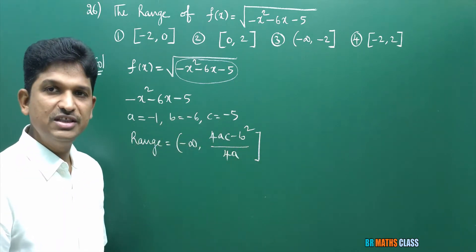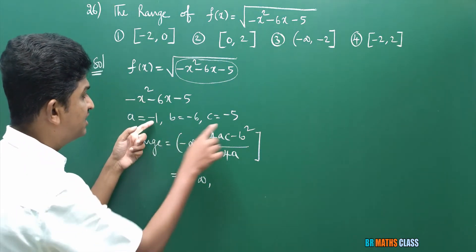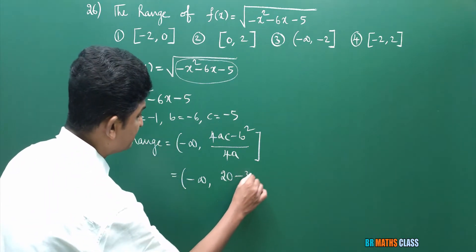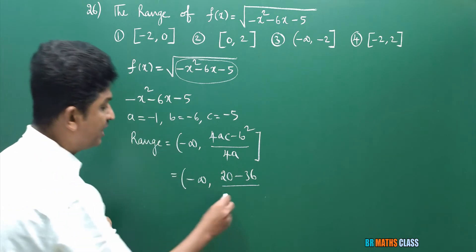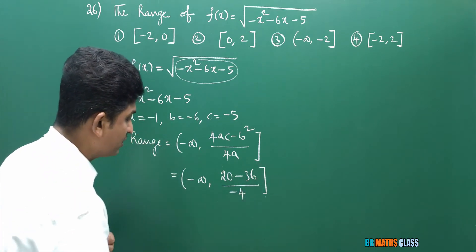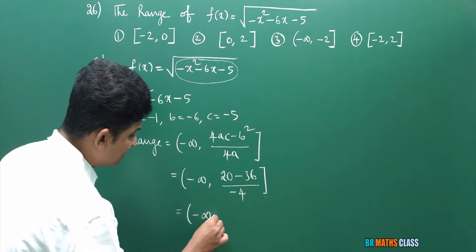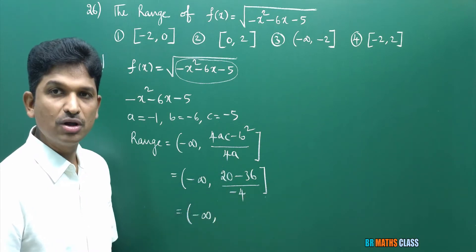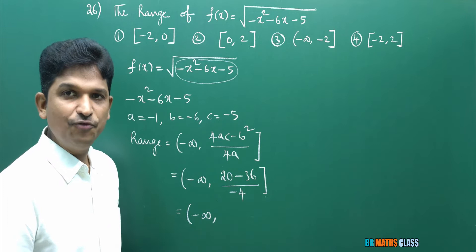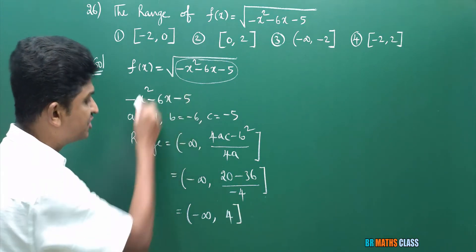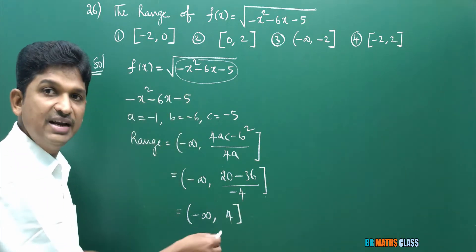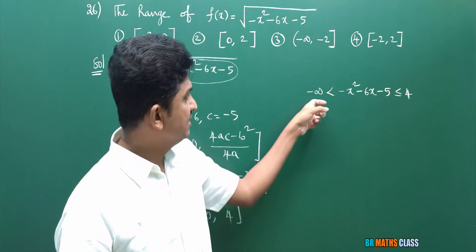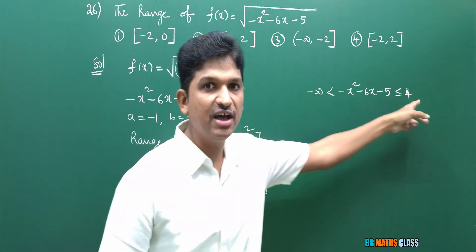Now substitute these ABC values. 4AC is 4 into minus 1 into minus 5, that is 20. Minus B square is minus 36. Divided by 4A is 4 into minus 1, that is minus 4. So 20 minus 36 is minus 16. Minus 16 divided by minus 4 is 4. So I got that this expression lies in the interval (-infinity, 4]. Writing the same thing: minus infinity less than this expression less than or equal to 4.